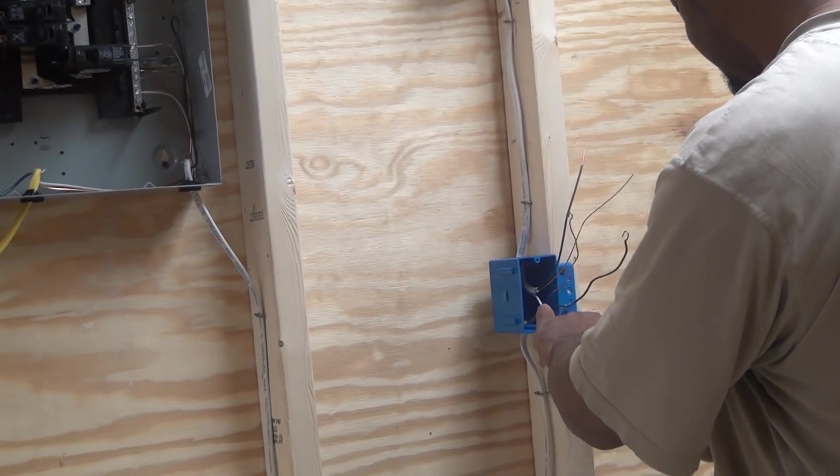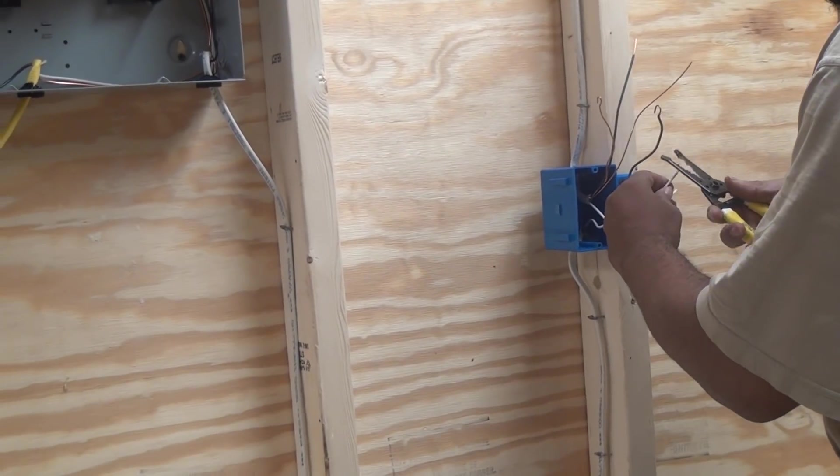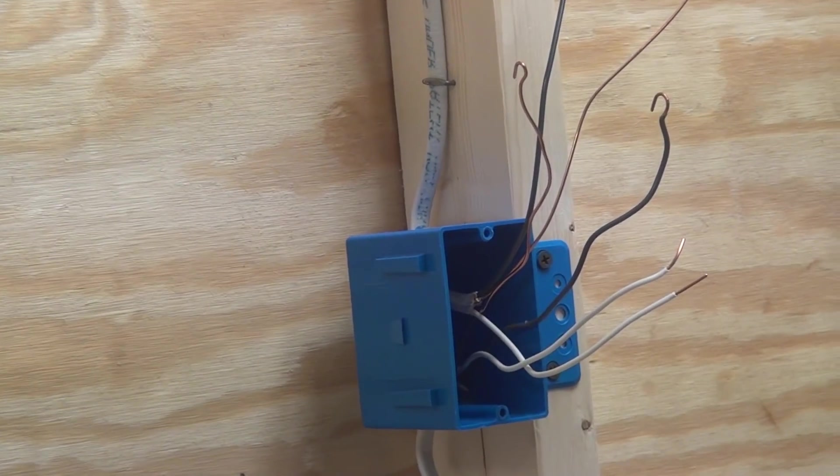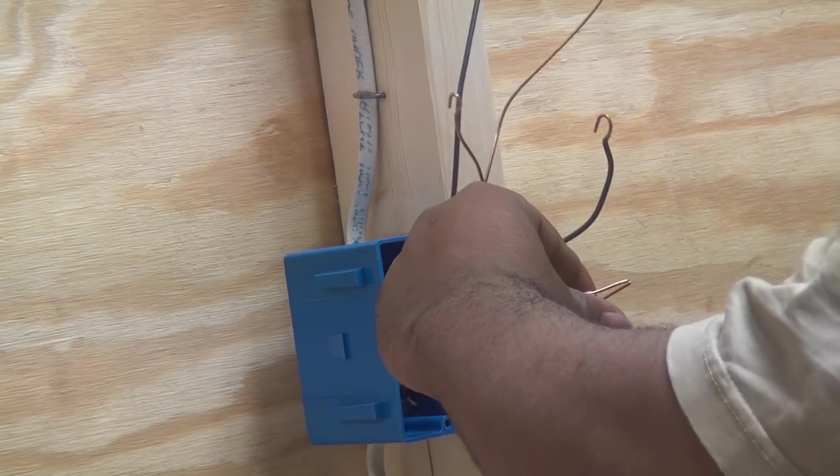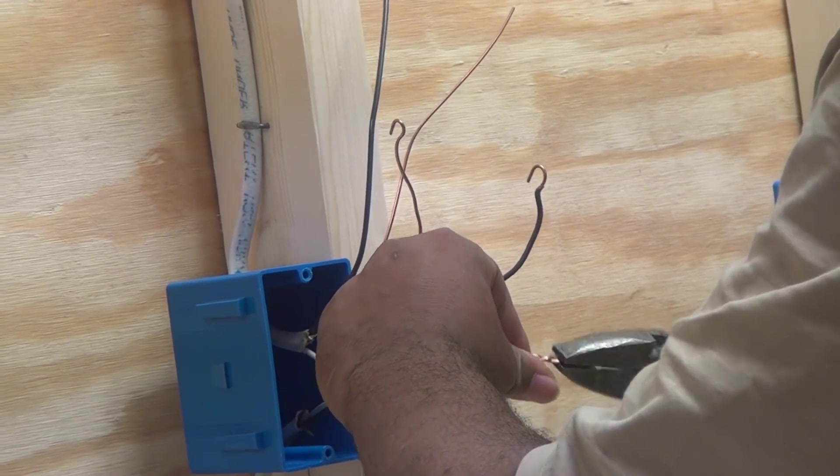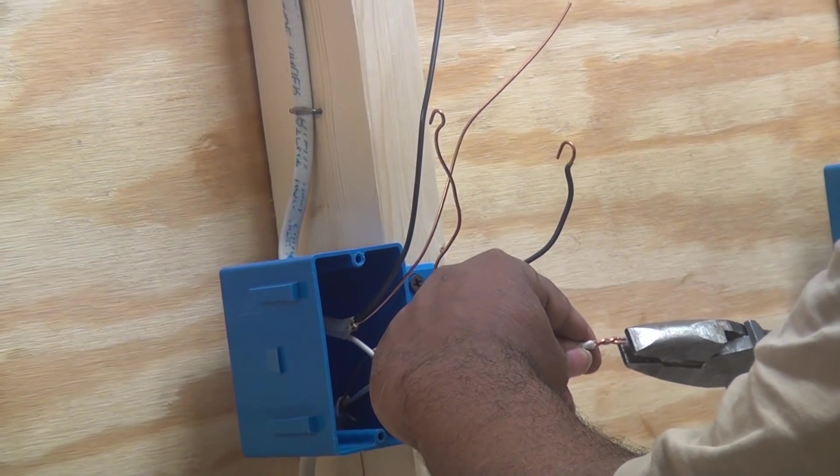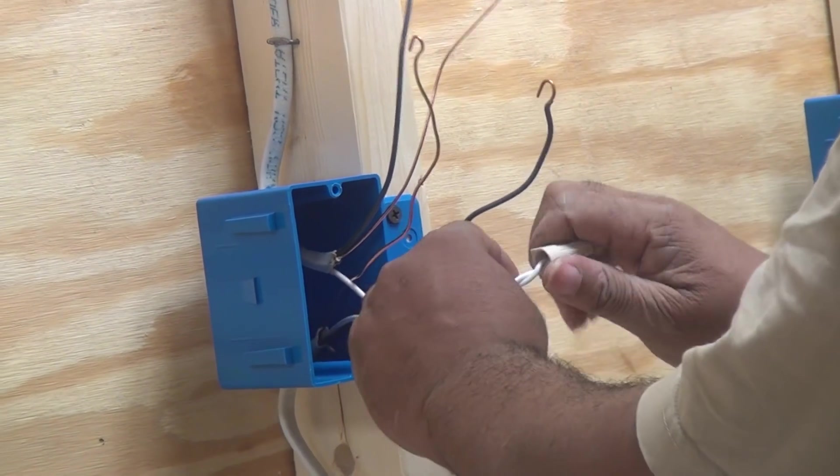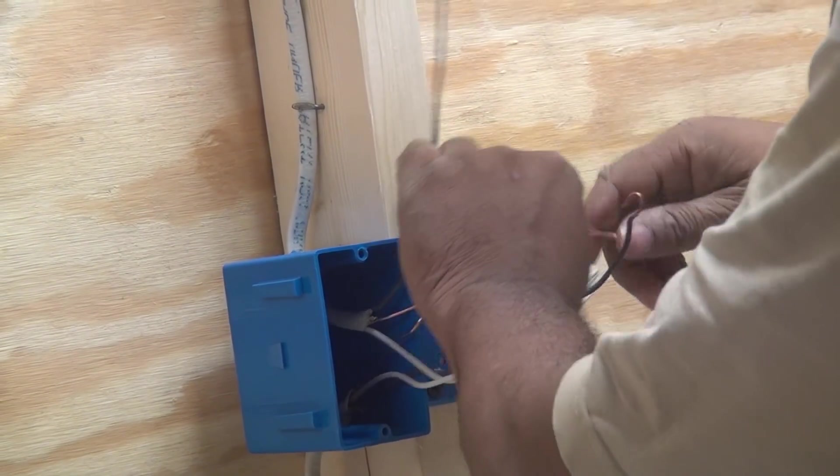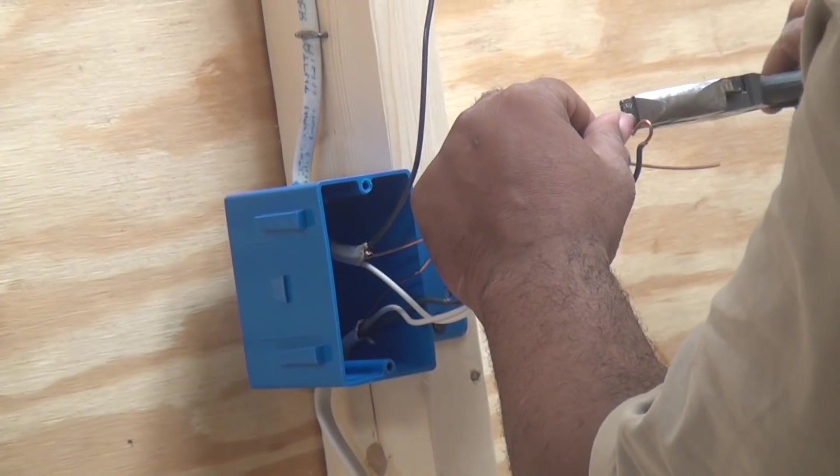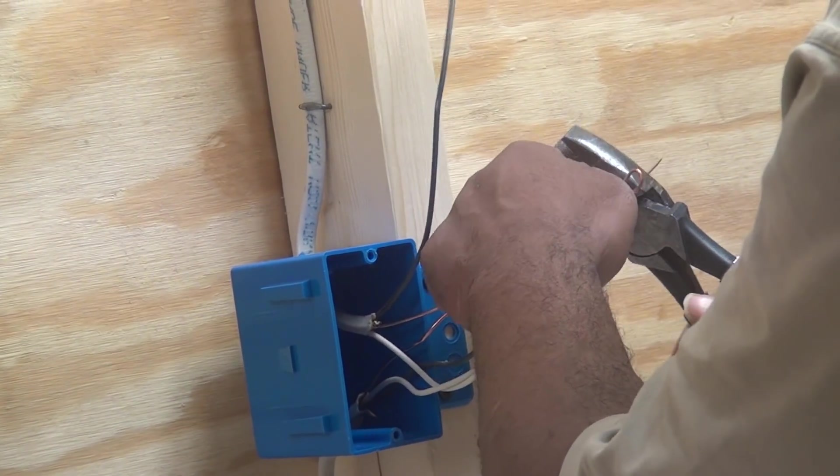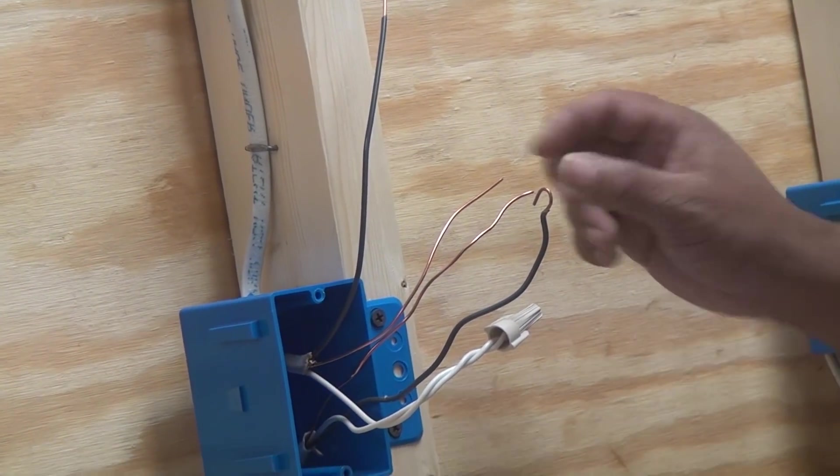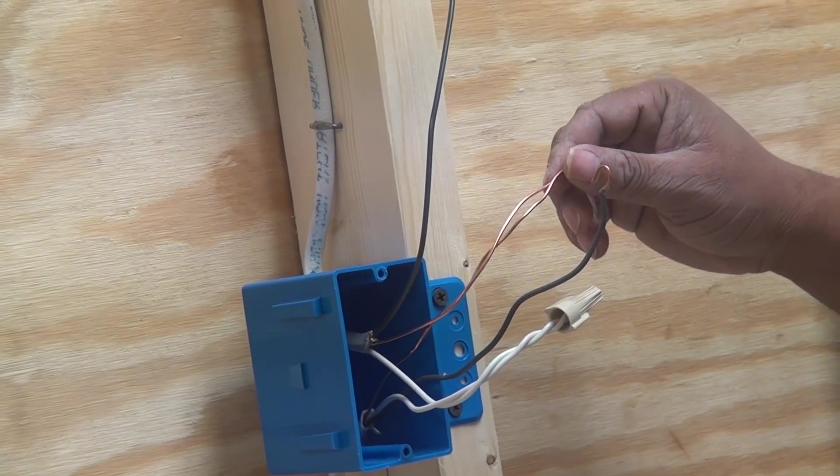We're going to splice this guy together. I'm not going to do a really fancy, super neat job, because you only get so much time on these videos, and I'm doing my best to try to get these videos to be a little bit shorter. So I'm going to do my best to keep it short and sweet. I'm going to put a wire nut on that guy. And there's one thing I've got to do. I've got to get me a piece of bare ground wire there. So give me one second. I'll be right back.